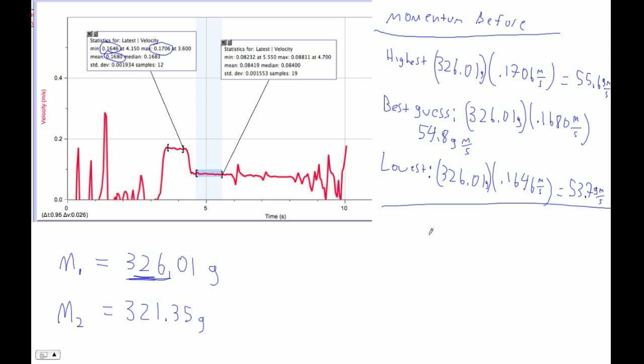If the momentum afterwards falls in that same range, then it could be that momentum is conserved. We certainly haven't disproven it. In science, we don't prove too many things, but we certainly propose theories, and they can be disproven. And if they can't be disproven, they're not scientific theories. Now, afterwards, the total mass, afterwards, aren't they both stuck together? So the total mass is 326.01 plus 321.35. 326.01, 321.35. It's 647.36. Because the gliders are stuck together afterwards, that's the total mass afterwards.